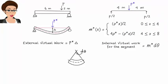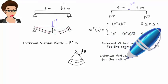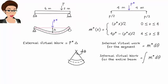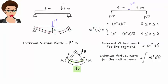To determine internal virtual work for the entire beam, we need to integrate the expression over the entire length of the beam. But before we can use this equation to calculate internal virtual work, we need to express d theta in terms of dx, since M star is a function of x. Let's start by referring to the length of this segment as dx. This is the infinitesimal length of the tiny beam segment.